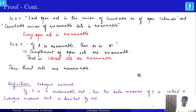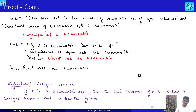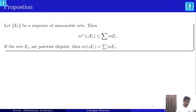Welcome back to our course on measure theory and integration. In the previous lecture we ended with defining Lebesgue measure — if a set is a measurable set, then the outer measure of that set is called the Lebesgue measure, denoted by m. In this lecture we are going to state some important results based on measurable sets.